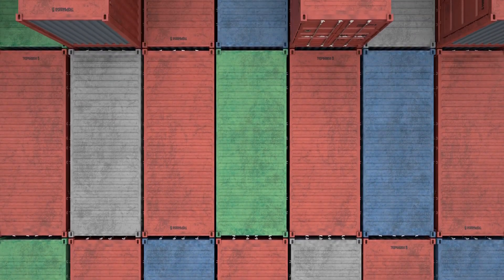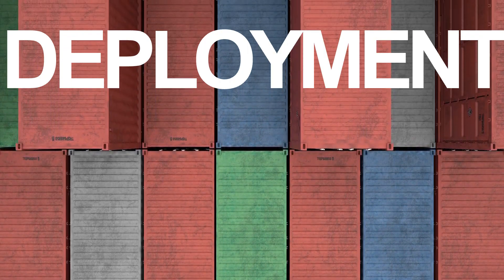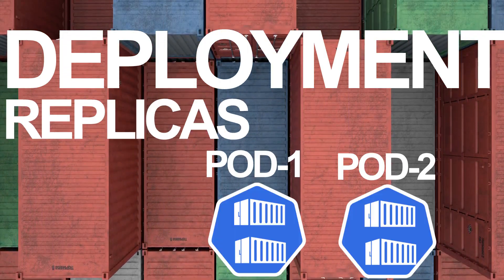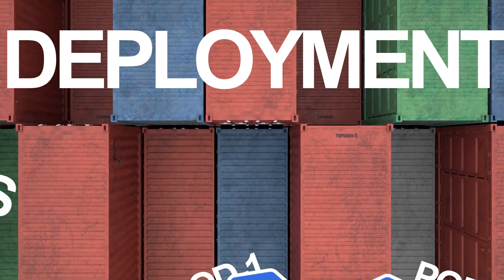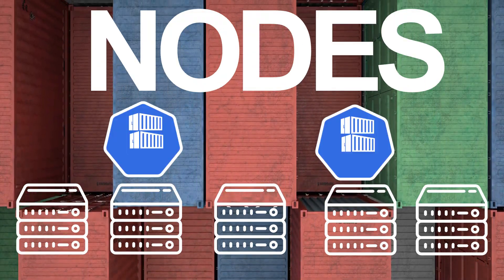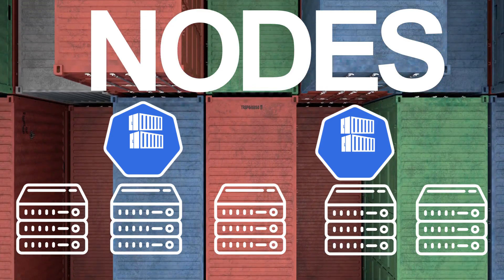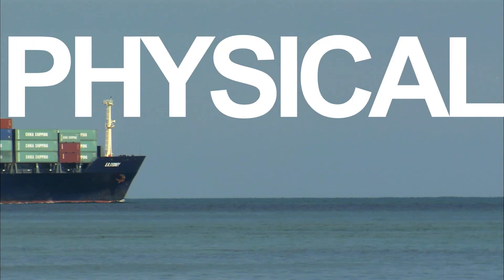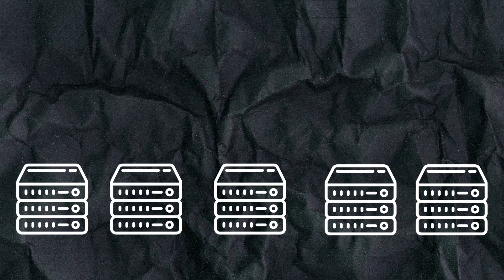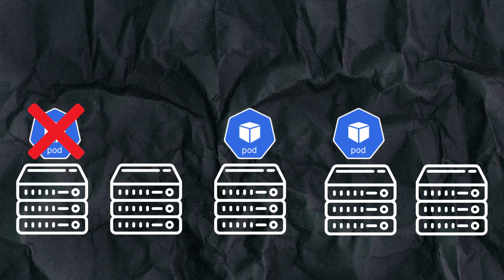If you want to run a pod constantly, like a web server, a proxy, or an application, you can use a Deployment. A Deployment has a number of replicas which tells Kubernetes how many pods to run concurrently. Pods are distributed across nodes in the cluster — nodes are machines where the containers run. Nodes can be physical on-prem or virtual cloud machines.